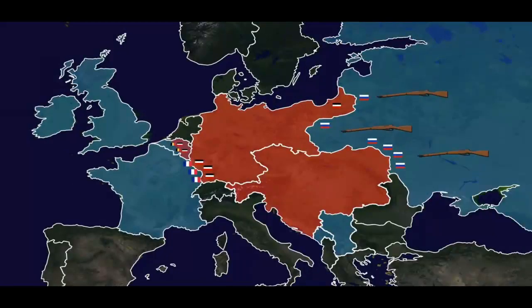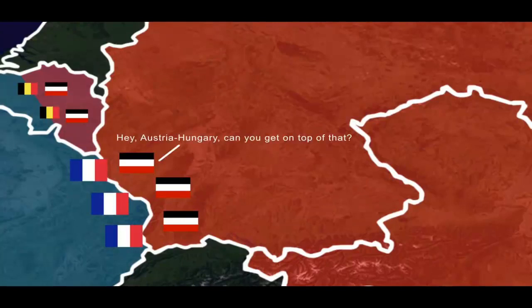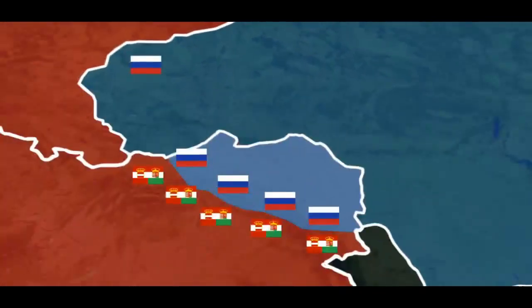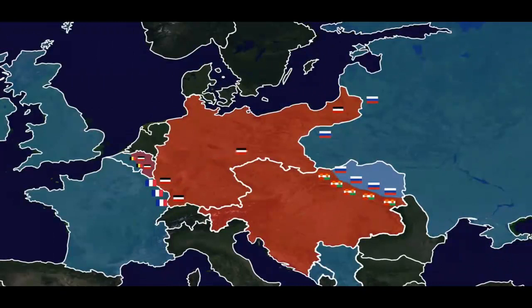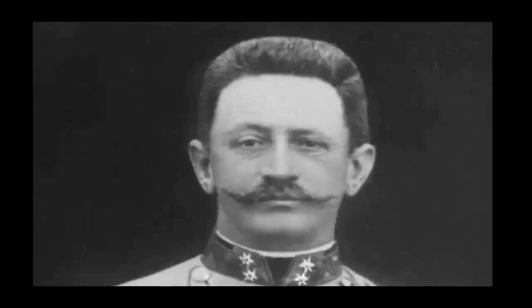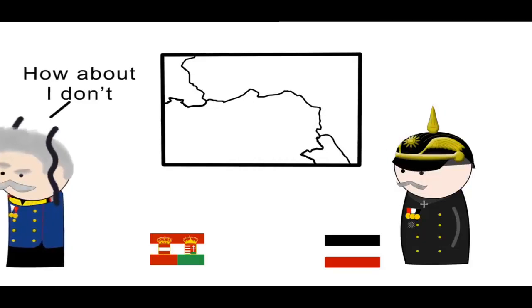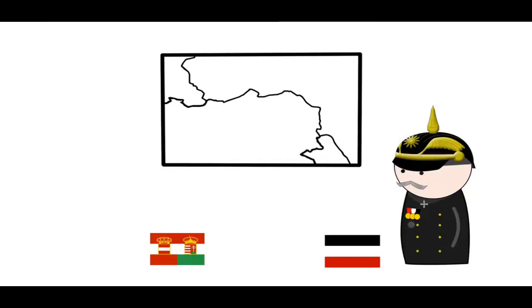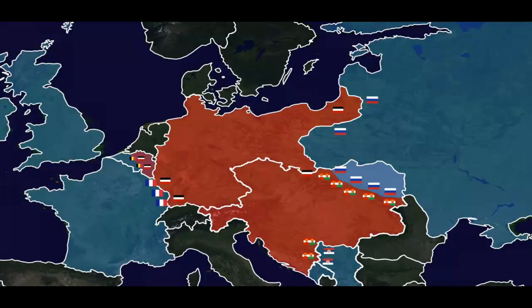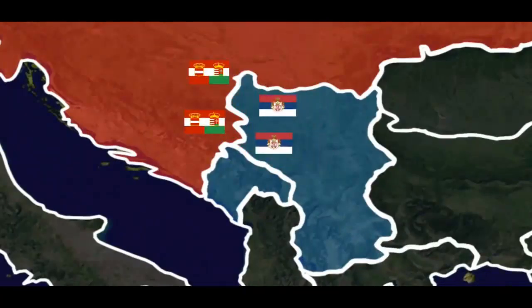Russia mobilized far earlier than expected, pressuring Austria-Hungary. Germany had to send troops back east to defend against Russia. The Austro-Hungarian chief of staff turned out to be a poor military strategist — Austria-Hungary constantly ignored Germany's advice and then came running back to Germany for help. Austria-Hungary even lost to tiny Serbia, which repelled all their invasion attempts at the start of the war.